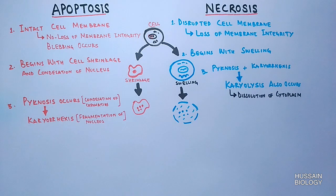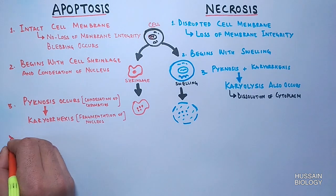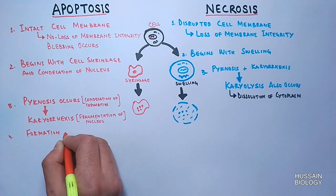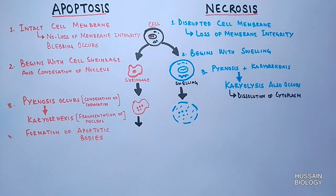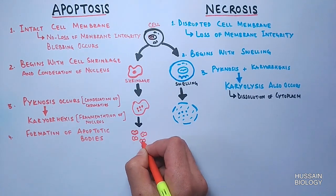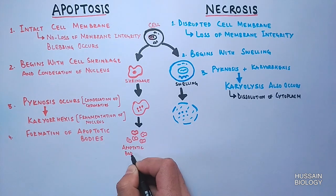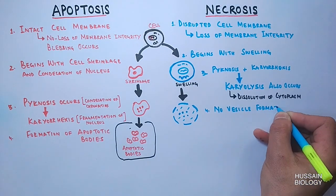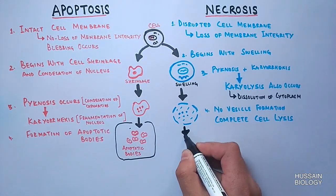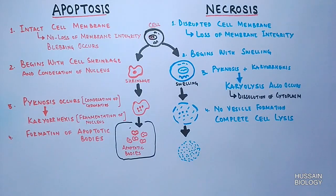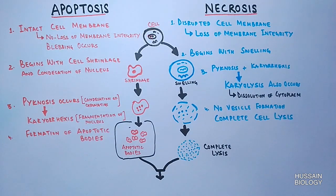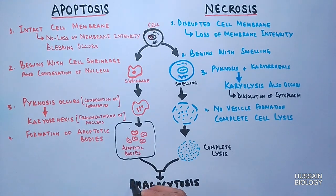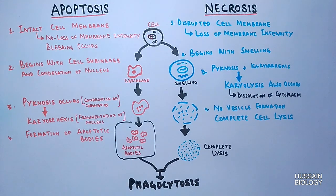In apoptosis, there is finally a formation of apoptotic bodies when the cell breaks apart into multiple vesicles. In necrosis, there is no formation of any vesicles; rather, there is complete cell lysis. Finally, both share a common step in the form of phagocytosis. So these are the major differences in their pathways.